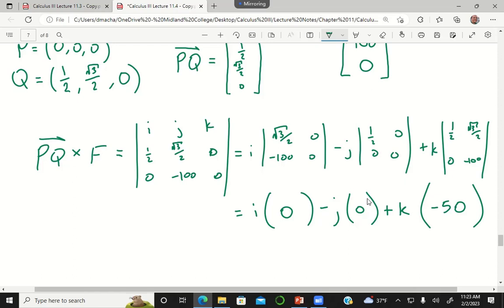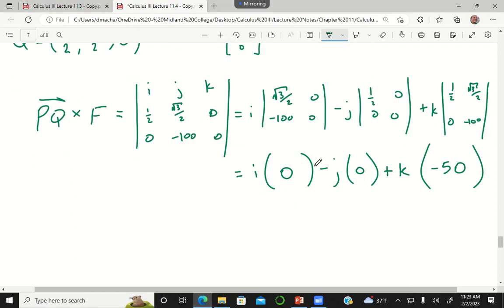Okay, so the vector that we're calling capital M in my formula is just k times negative 50. What are my components here, what are my entries in this vector?